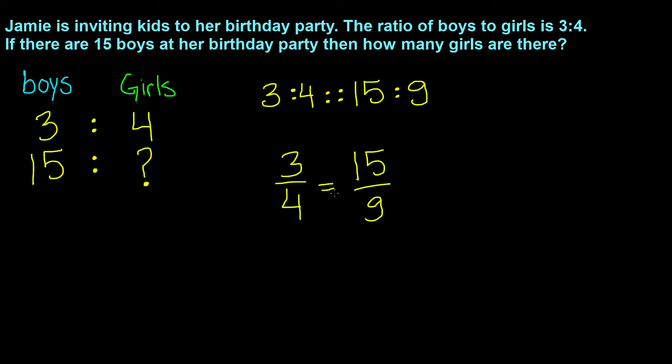Now, we use equivalent fractions to solve this proportion and find the missing number. Remember, when you have equivalent fractions, you can find them by either multiplying or dividing by the same number.